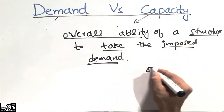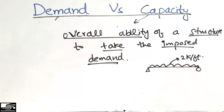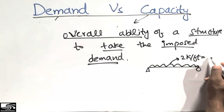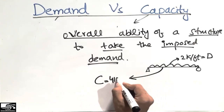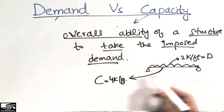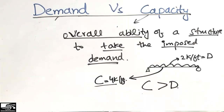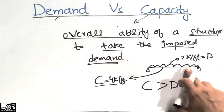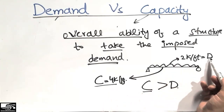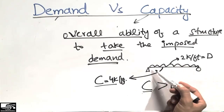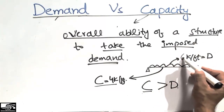For example, consider a simply supported beam with a load coming on it. Let's say the demand coming on this beam is 2 kips per foot, represented by D, and we assume the capacity of this beam C is equal to 4 kips per foot. Since capacity C is greater than demand D, this beam will resist the load safely and transfer it to the two supports without collapsing.